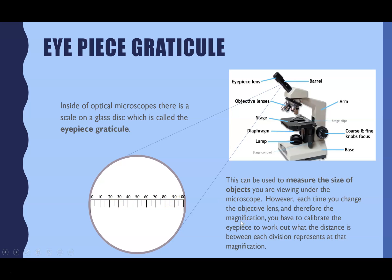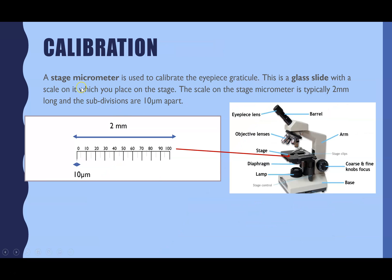To calibrate the eyepiece graticule, you use a second scale called a stage micrometer — a glass slide placed on the stage that measures distances in micrometres. The scale on it is 2 mm long, and each single division is worth 10 micrometres. So 10 divisions equal 100 micrometres.